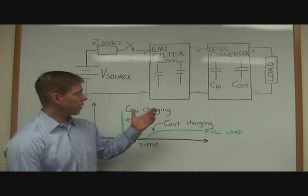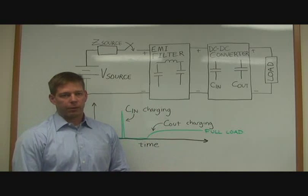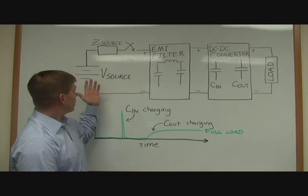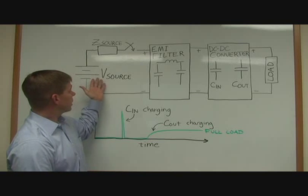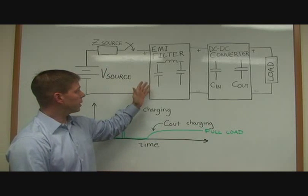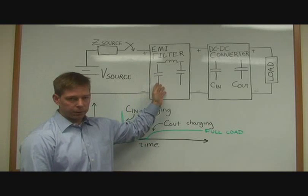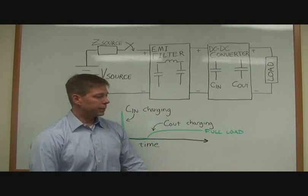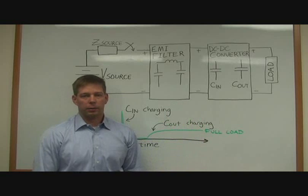On the board I have a block diagram of a typical DC-to-DC converter system with a source bus showing the source impedance, followed by an EMI filter and a DC-to-DC converter supplying a load.